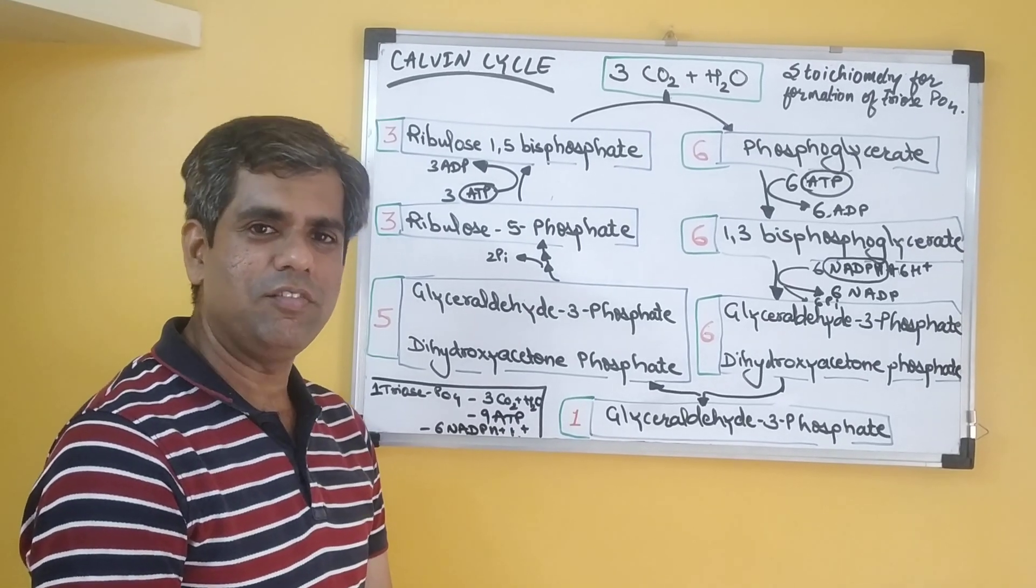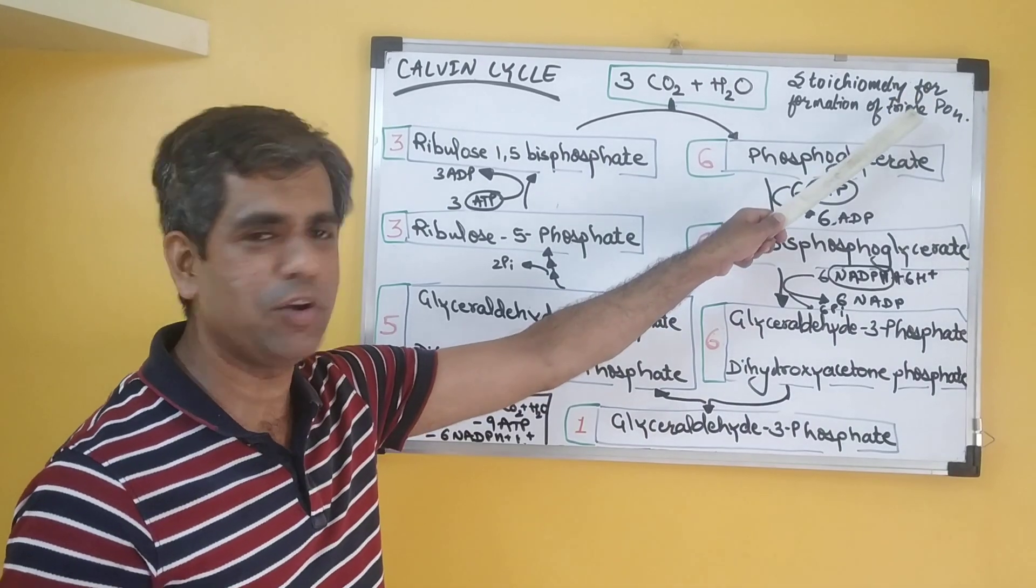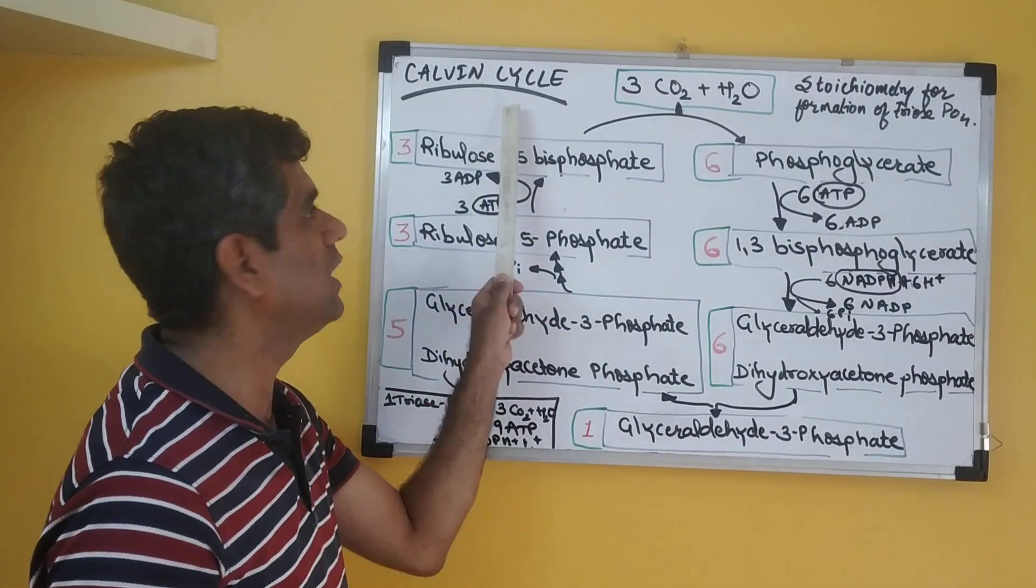Hi friends, today we will be talking about the stoichiometry for the formation of a typical triose phosphate by using a typical Calvin cycle.